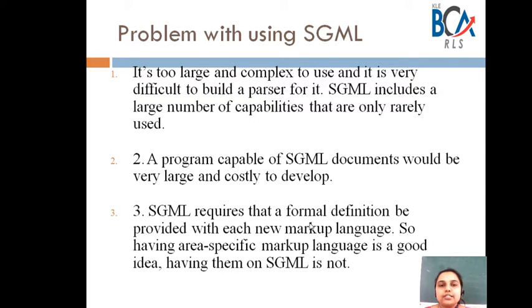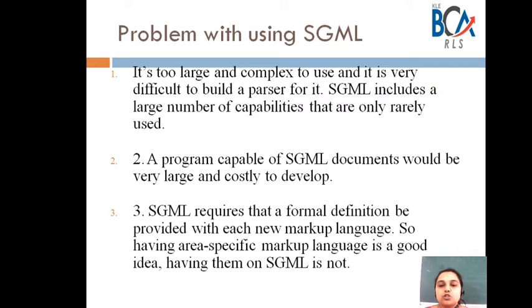The problem with using SGML is that it is very large and complex to use, and it is also very difficult to build a parser for it. SGML includes a large number of capabilities that are only rarely used. A program capable of processing SGML documents would be very large and costly to develop. SGML also requires that a formal definition be provided with each new markup language. So having area-specific markup languages is a good idea, but having them based on SGML is not ideal.